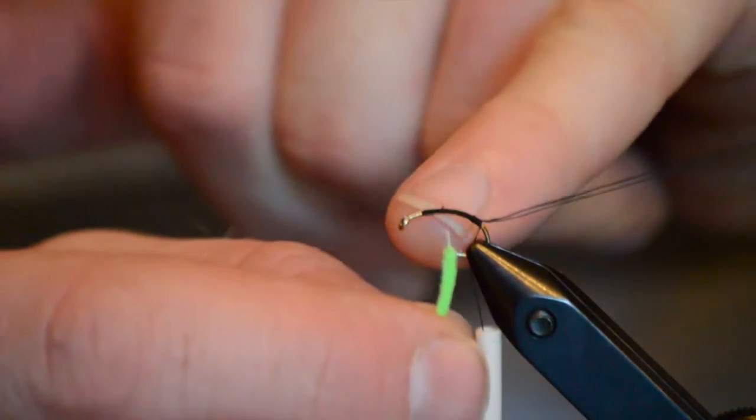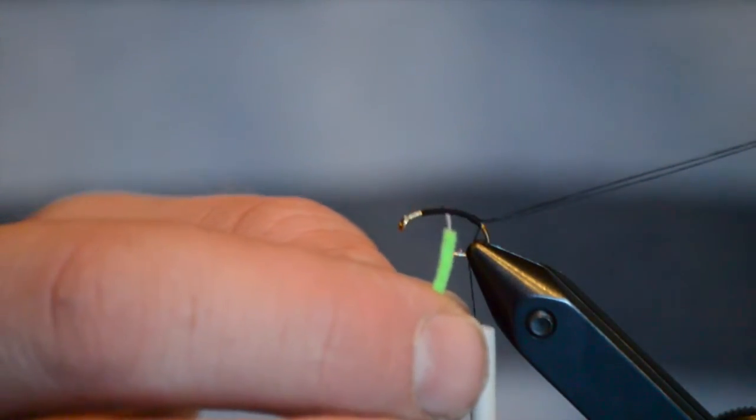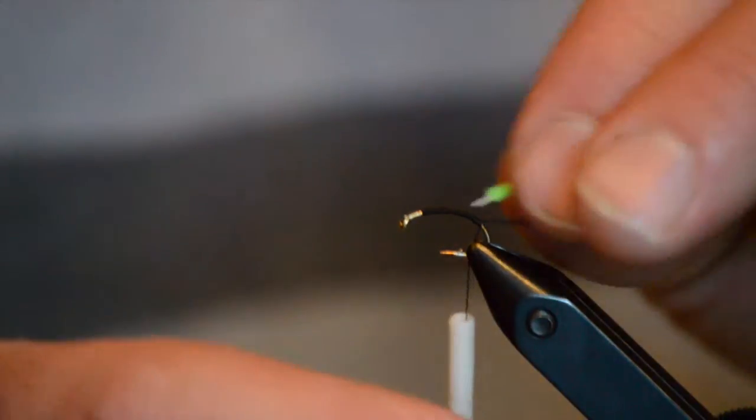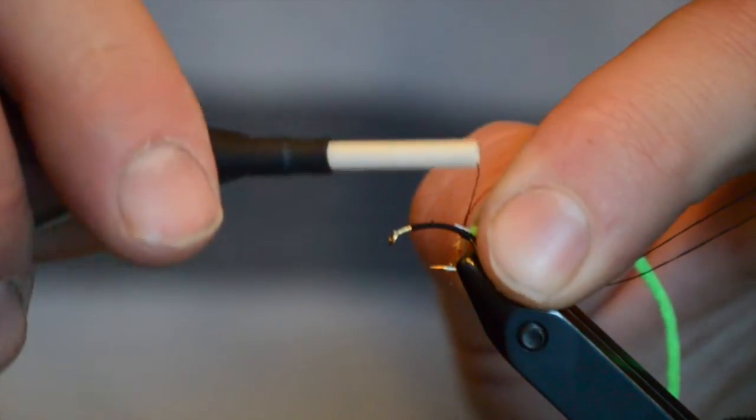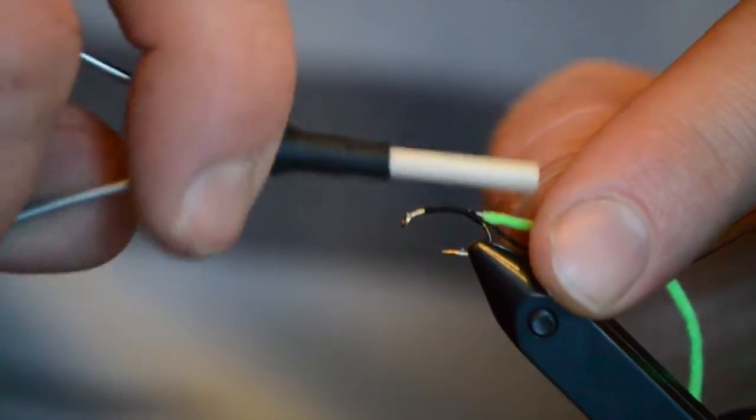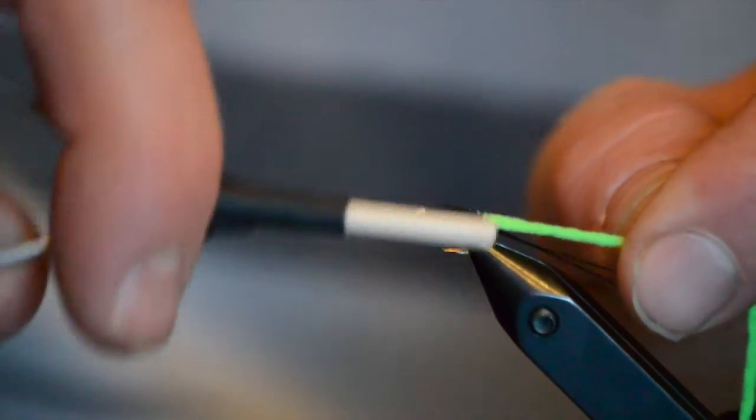We'll take our chenille and we'll pull out the fibers on the end there so that when we tie this in we can keep a uniform body shape to the abdomen section of this pattern. So we'll capture that with one soft loop and then a couple of tighter loops to secure that in place, making sure we're right towards the back of the fly.